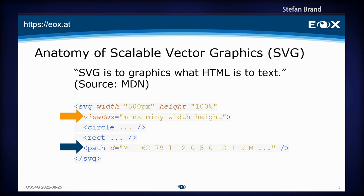One particularity is the viewbox attribute, which defines which part of the SVG is actually visible — it defines where to zoom in the coordinate system.